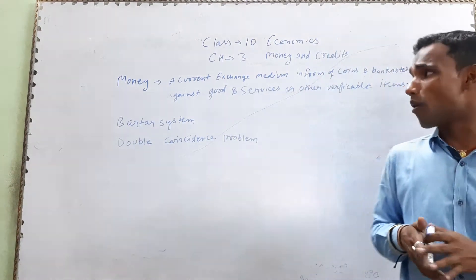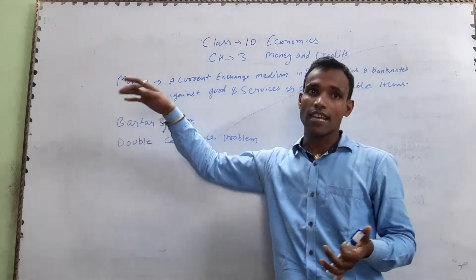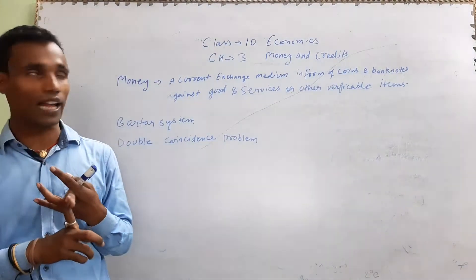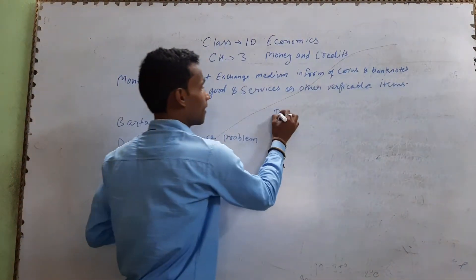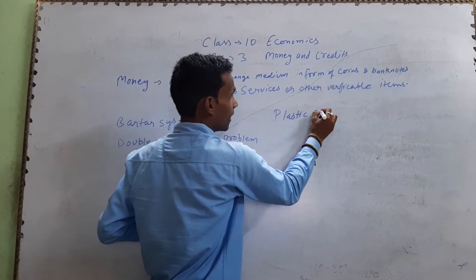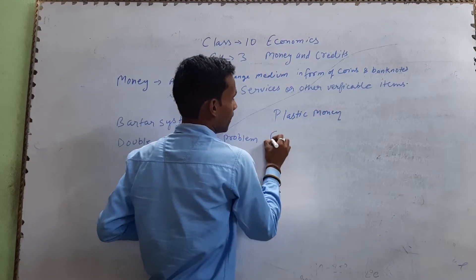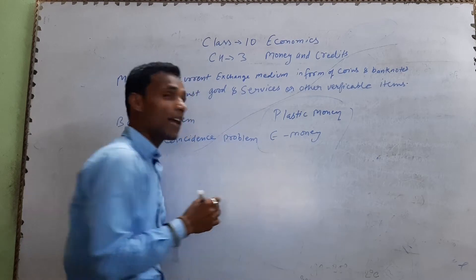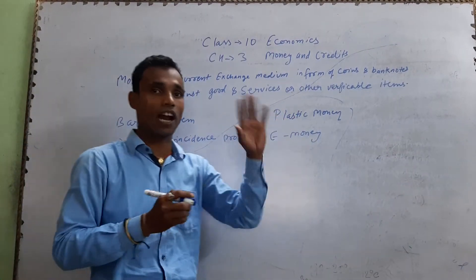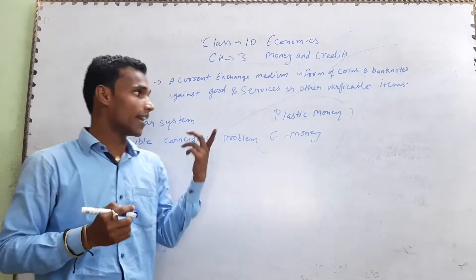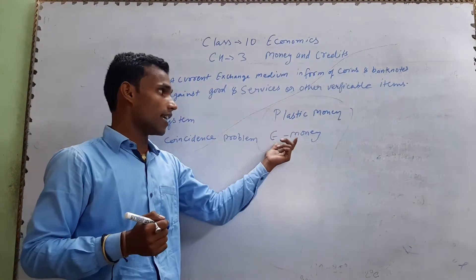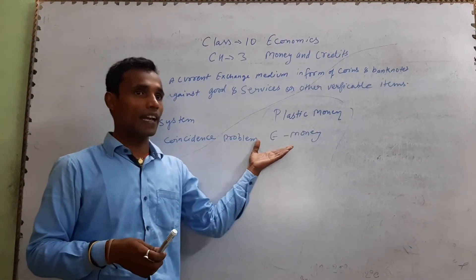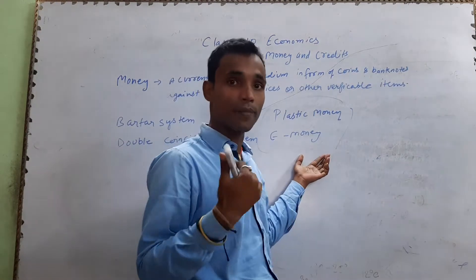Today's forms of money include coins, banknotes, and plastic money. Today we also have e-money — credit cards, and whatever you pay through online transactions, online banking, or UPI — it is all money.